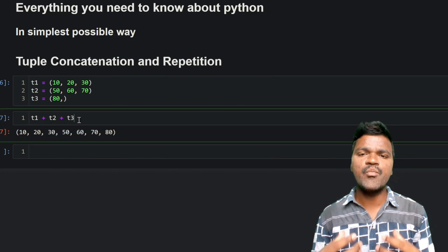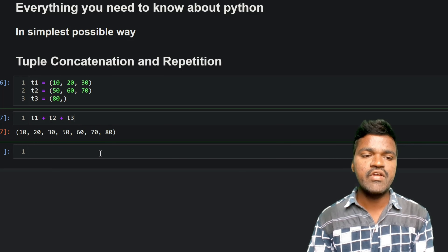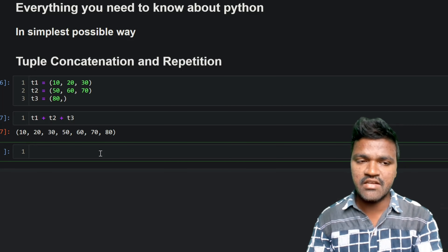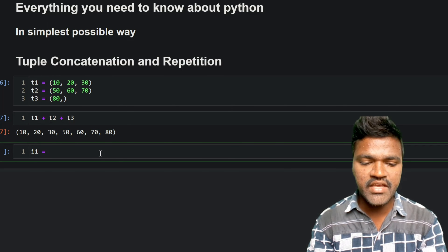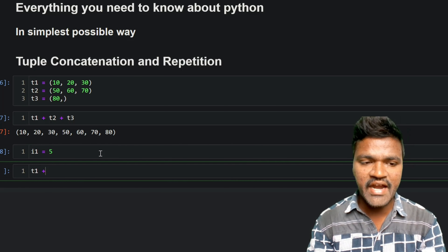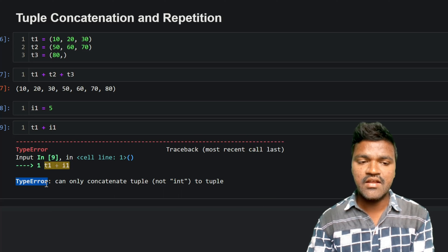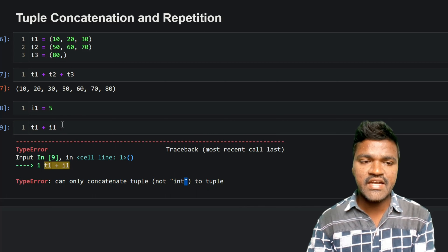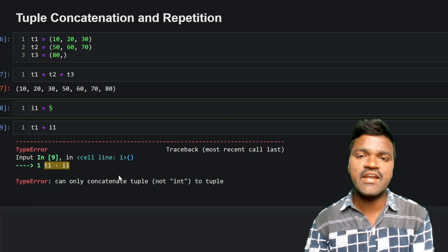Using the plus operator, we can concatenate as many tuples as we want. However, we saw an error when adding a tuple with an integer value. To illustrate: if I create i1 equal to 5 and try t1 plus i1, we get a TypeError — 'can only concatenate tuple to tuple, not integer.' You cannot concatenate a tuple with an integer.